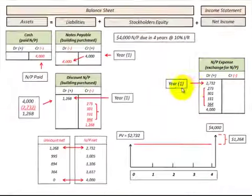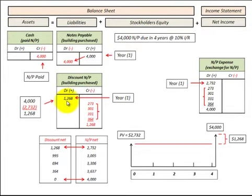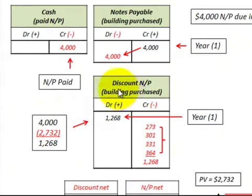Now we need a debit here of $2,732 and a credit here of $4,000 that we're going to pay at the end of the fourth year. So we need another debit entry here to keep our accounts in balance. So what we use here is a discount to notes payable.